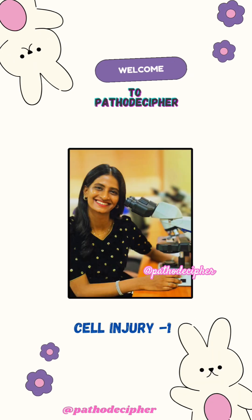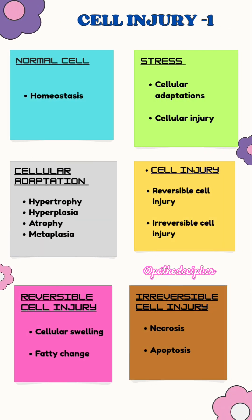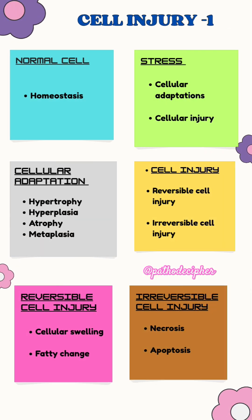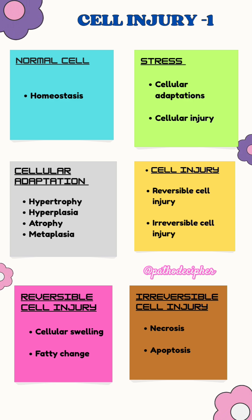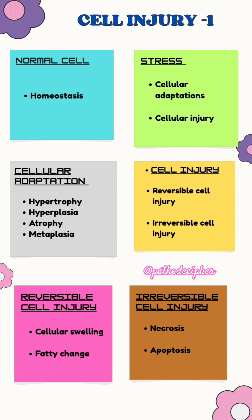Hi everyone, welcome to the Pathology For channel. We'll go ahead with General Pathology: Cell Injury, Part 1. Here are a few quick concepts about cell injury. The normal cell should maintain homeostasis. If that fails due to some stresses, the cell will either undergo cellular adaptation or cellular injury, depending mainly on the amount of stimuli given to the particular cell. The first stage will lead to cellular adaptation.